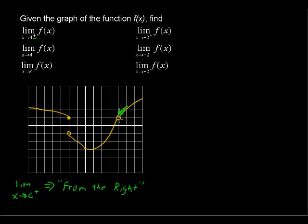Getting closer and closer — and even though there's a hole here, so we can't say exactly what the function is when x equals 4 (it's undefined because there's a hole there), but when x gets very close to 4 from the right-hand side, we're getting a y value of 1. So the limit of this function as x approaches 4 from the right is equal to 1.